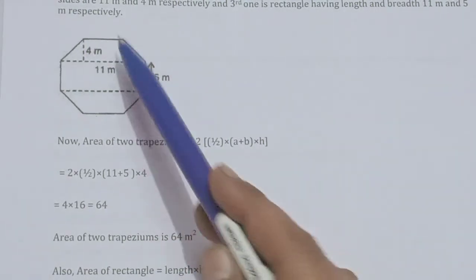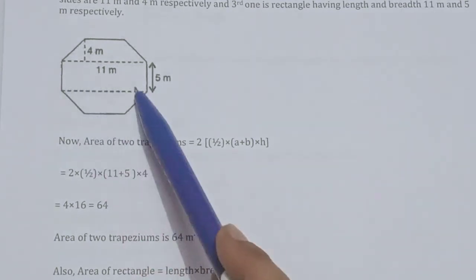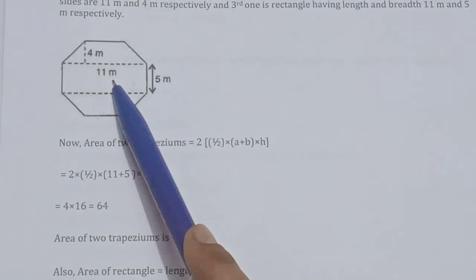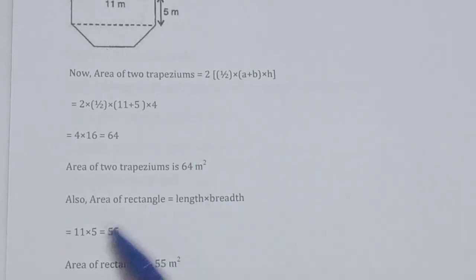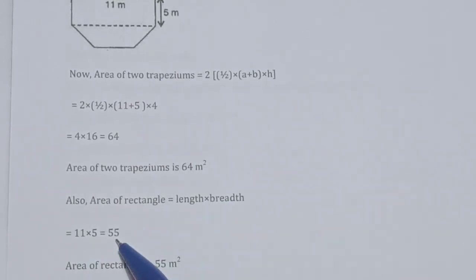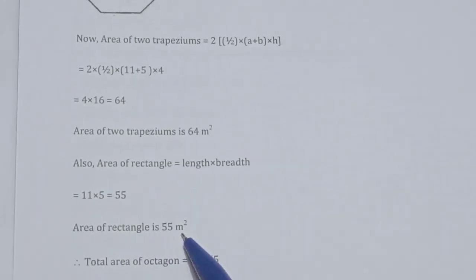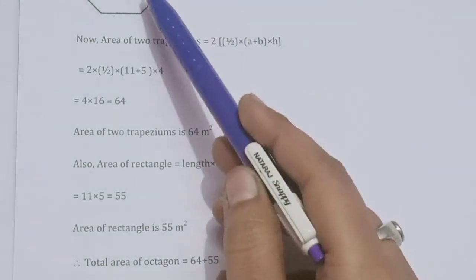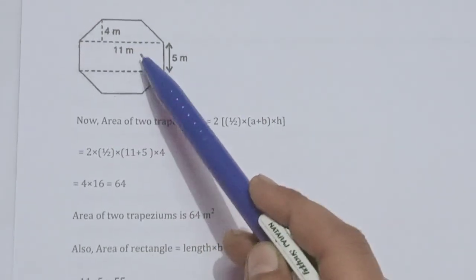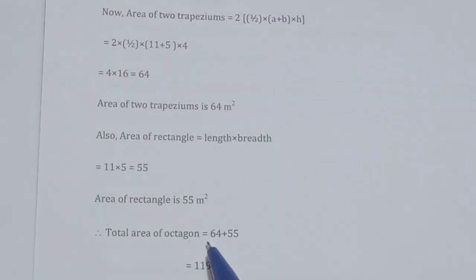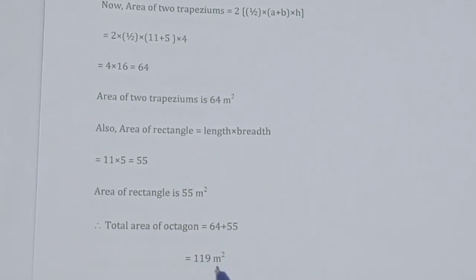The third shape in the middle is a rectangle. Area of rectangle = length × breadth = 11 × 5 = 55 m². Therefore, total area of octagon = area of two trapeziums + area of rectangle = 64 + 55 = 119 m².